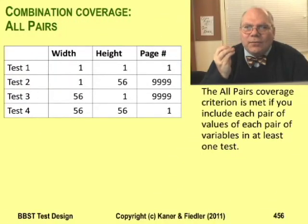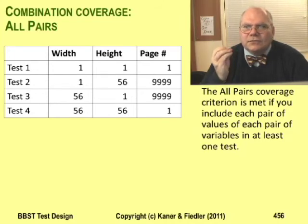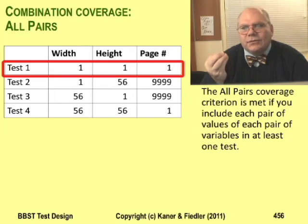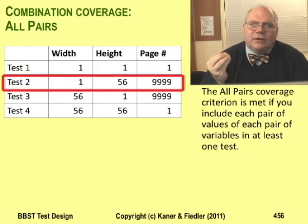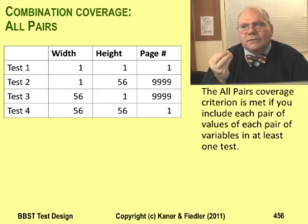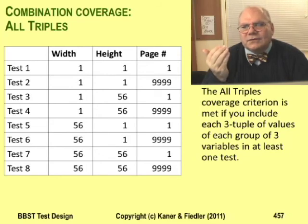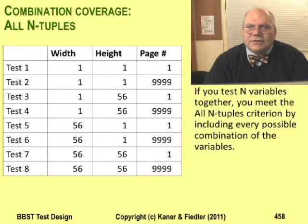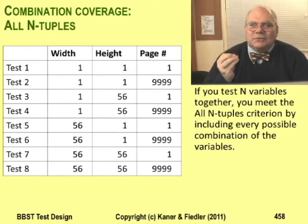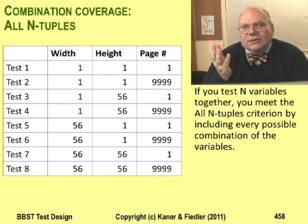To achieve all pairs coverage, you have to test every possible pair of values — it's not enough to cover all individual values on their own; that's all singles. In the page dialog example, you need at least one test with a small width and small height, and at least one test with a small width and large height. The chart shows all pairs coverage with only four tests. All triples coverage requires that your tests include every three-way combination of values. This example has only three variables, so all triples takes us back to the first combination chart. The last coverage criterion is all n-tuples: if you test n variables together, all n-tuples requires that you cover all combinations of all the variables. Here, all triples and all n-tuples mean the same thing.